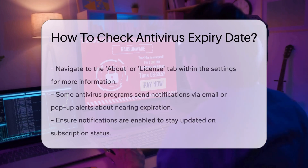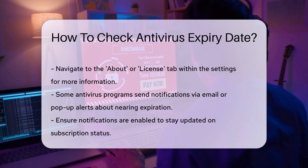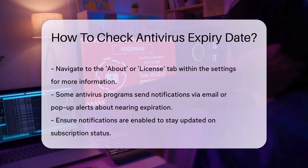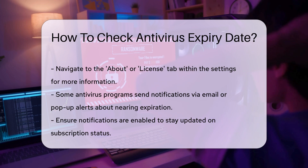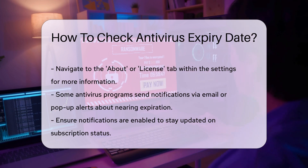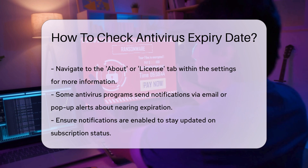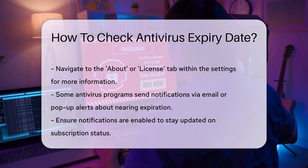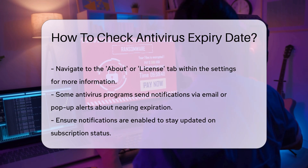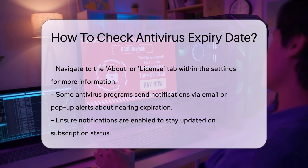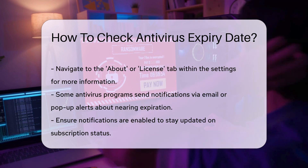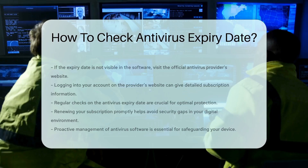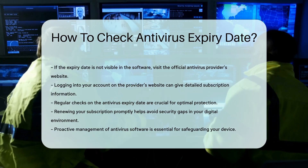Additionally, some antivirus programs send notifications via email or pop-up alerts when your subscription is nearing its expiration. Ensure that you have notifications enabled to stay informed about your subscription status. If you cannot locate the expiry date through the software interface, consider visiting the official website of your antivirus provider. Logging into your account can provide detailed information regarding your subscription status.